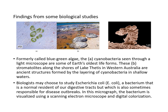For example, formerly called blue-green algae, we now call them cyanobacteria — seen here through a light microscope. These are some of the oldest life forms, and stromatolites are formed by layering of cyanobacteria in shallow waters over millions of years. Biologists may also study E. coli (Escherichia coli), a bacterium and normal resident of our digestive tract that can cause disease outbreaks, visualized here using scanning electron microscopy with colorization.